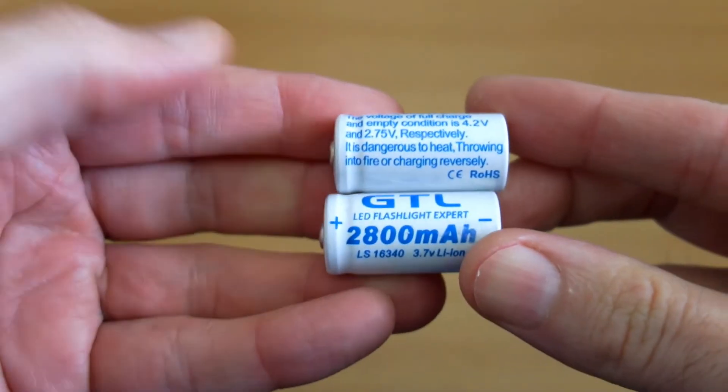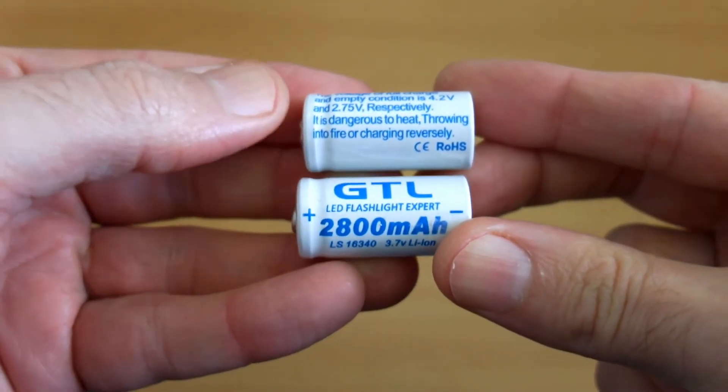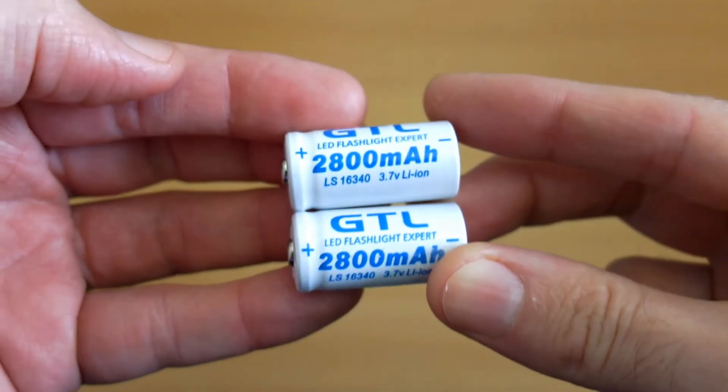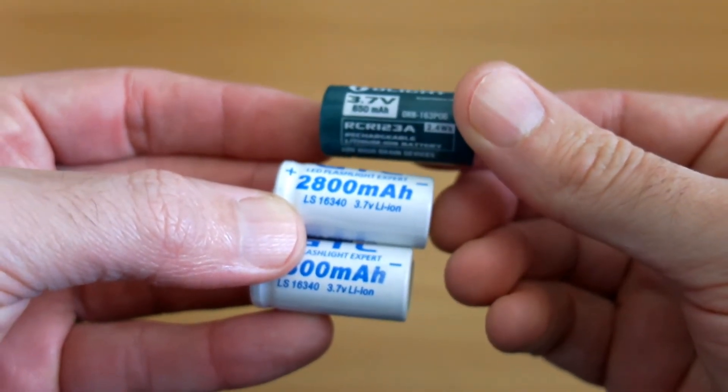Taking them out of the wrap, there's nothing wrong with the construction of the batteries. I'm comparing them to an Olight rechargeable CR123A which I've been using for a while.